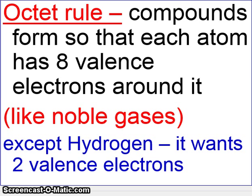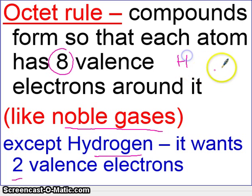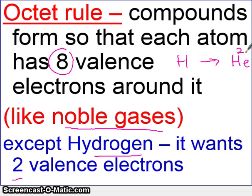What governs this whole idea is the octet rule. The word octet refers to eight, and it refers to eight valence electrons. So every element bonds to have eight valence electrons, to be like a noble gas. Except hydrogen — hydrogen will only have two, because hydrogen wants to be like its noble gas, helium, which only has two electrons.